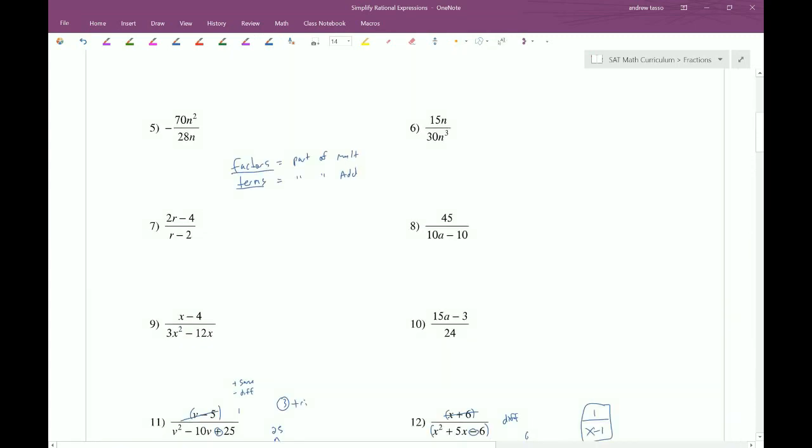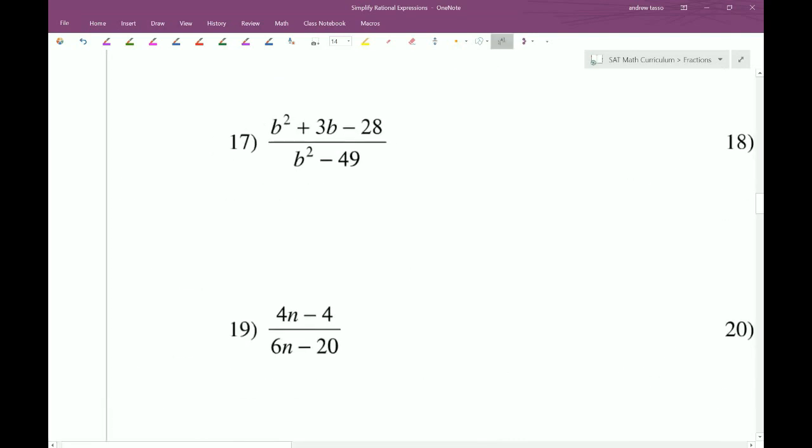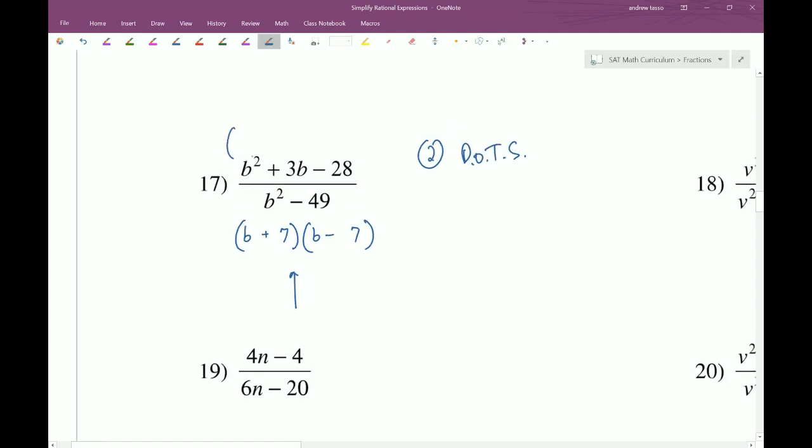Now, let's see if we can find any examples of our second method of factoring, which is known as dots, difference of two squares. So, that's here on the bottom. We notice that both of these terms are perfect squares. And there's a difference, meaning a subtraction in the middle. So, what we do is we take the square root. Which is easy to do when you have a b squared. It's just b and b. And when you have 49, you should know that 7 times 7 is 49. And we just put a plus and a minus.